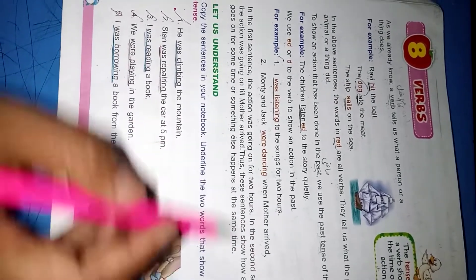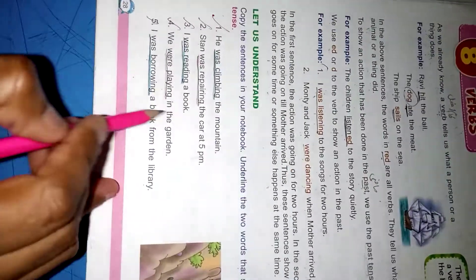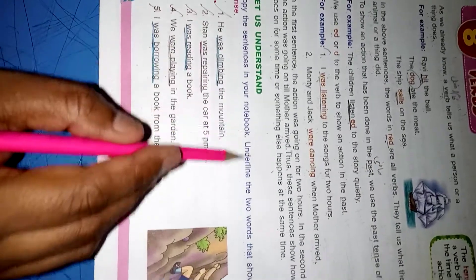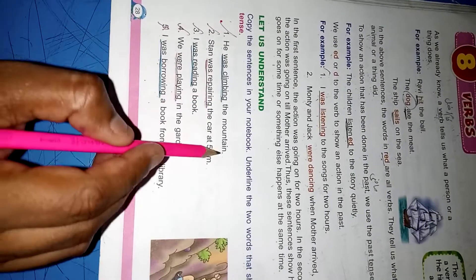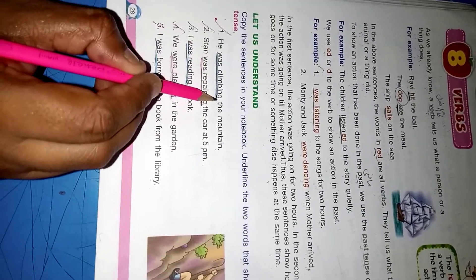Let us understand these exercises. Copy the sentences in your notebook and underline the words that show the past tense. He was climbing the mountain. 'Was climbing' is past tense.